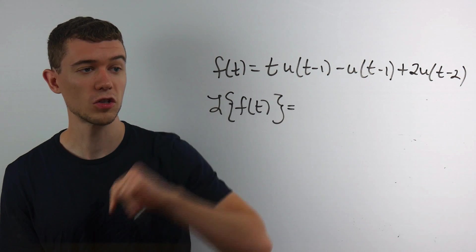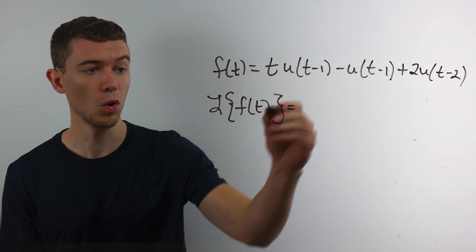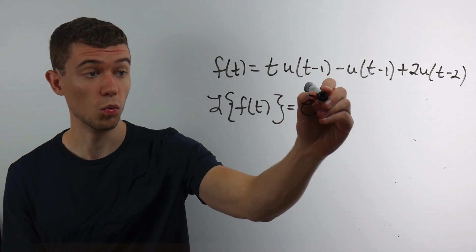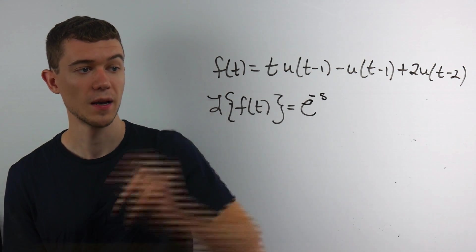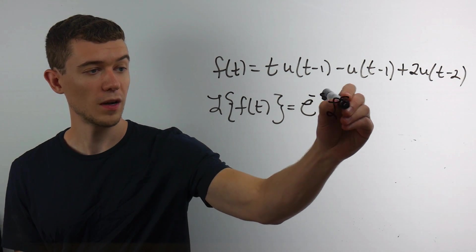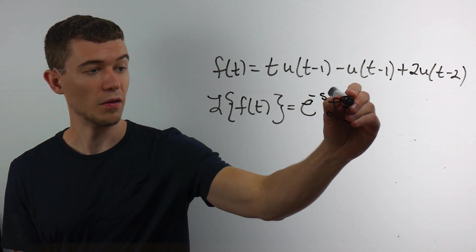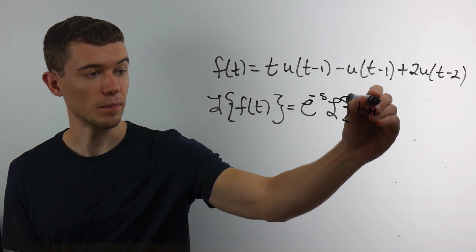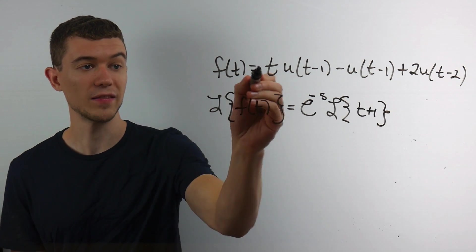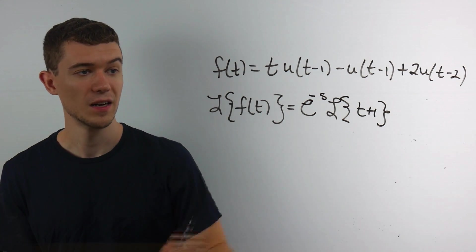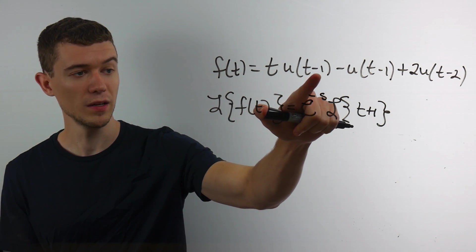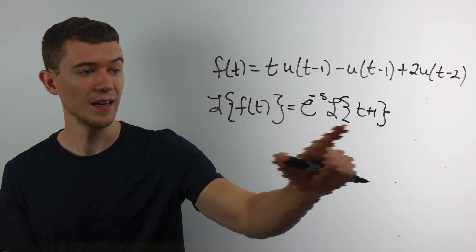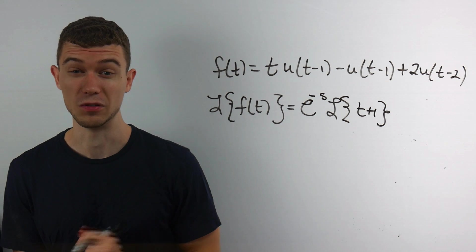Well, the rule is if I'm taking the Laplace transform of u of t minus 1, that becomes e to the minus, in this case, 1s, because of this minus 1, times the Laplace transform of the function, but evaluated at t plus that 1. Or in other words, I have to shift by this amount. So since this one is minus 1, this comes out to be an e to the minus s. And this function t gets shifted by that 1 in the other direction. Kind of interesting.